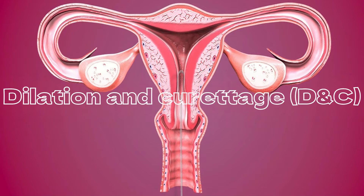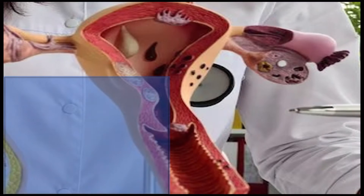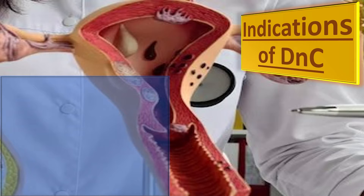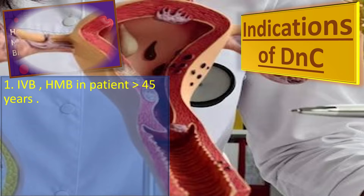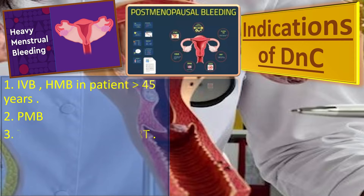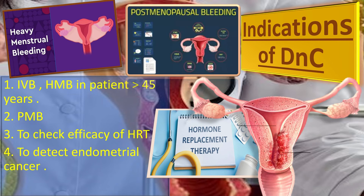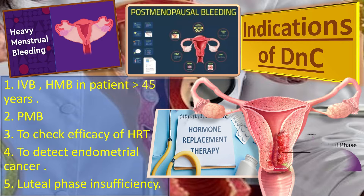The topic of our discussion today is diagnostic D&C or dilatation and curettage. First, we will talk about the indications of D&C. Those include irregular vaginal bleeding or heavy menstrual bleeding in patients over 45 years of age, postmenopausal bleeding, checking the efficacy of hormone therapy like tamoxifen, detecting endometrial cancer and precancerous conditions prior to surgery, and detecting luteal phase insufficiency as a workup of infertility.